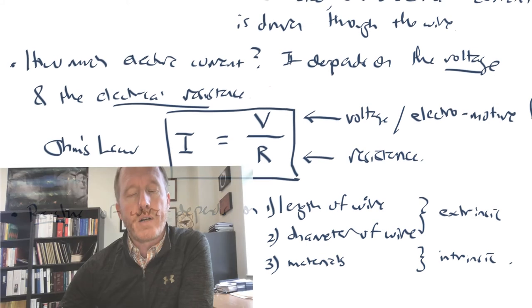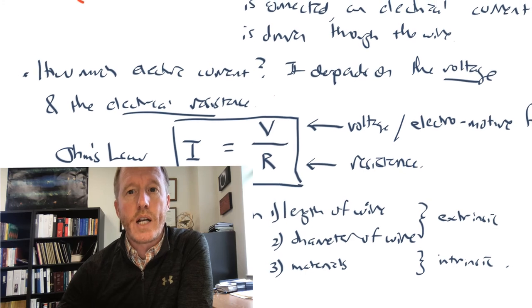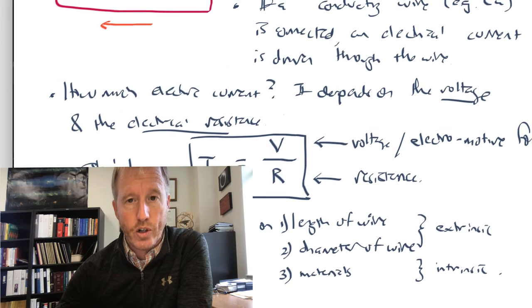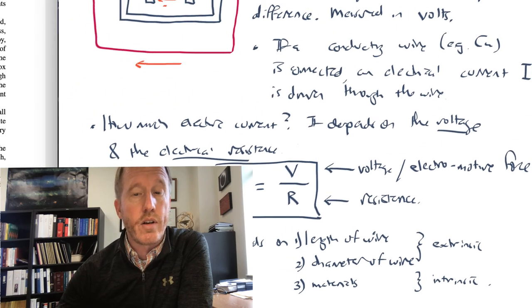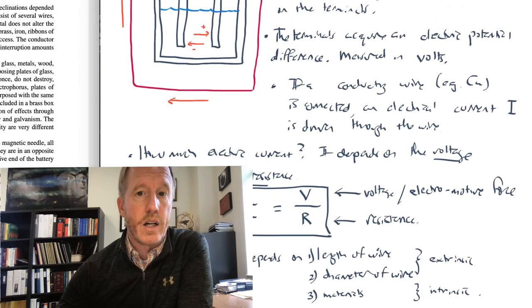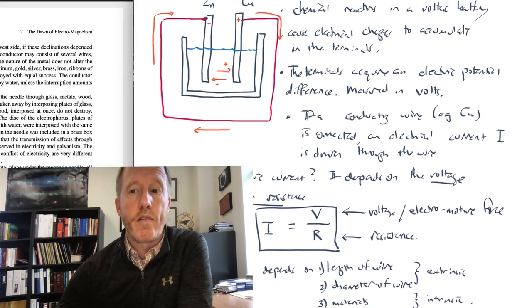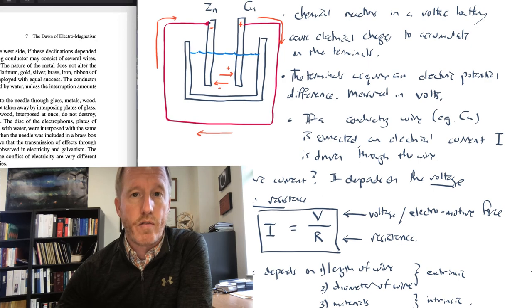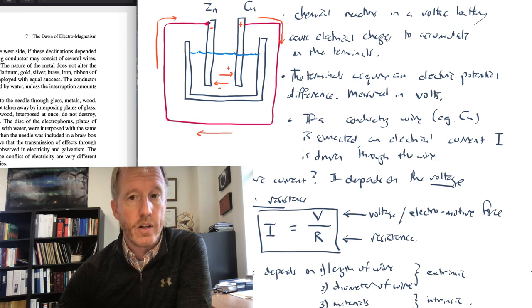Well, because what, remember what Ørsted is doing is he's hooking up this battery to drive an electrical current through this wire and looking at the effect on the magnetic compass needle. And in his experiment three, he found that when you connect different types of wire to the electrical terminals of the battery, the effect on the compass needle is increased or decreased depending on the kind of wire.